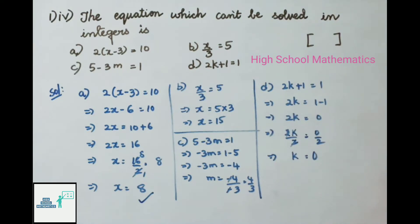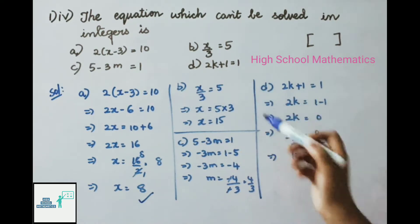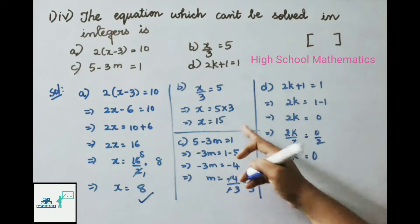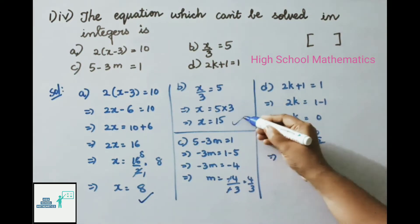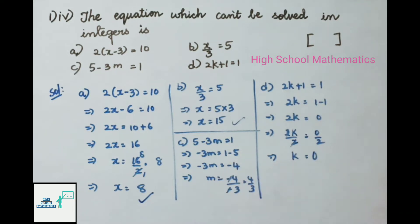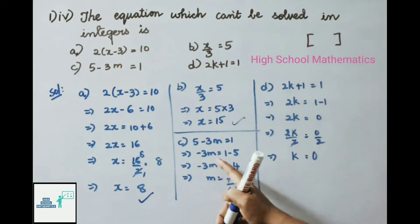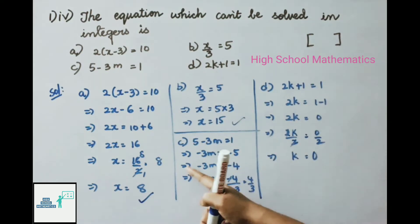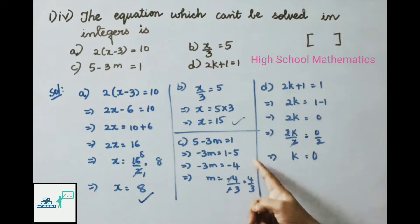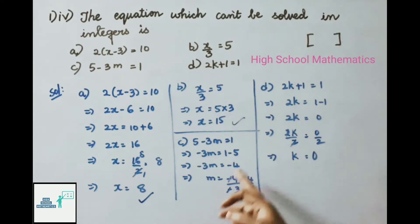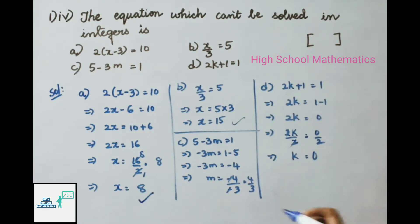Second equation: x/3 = 5, so x = 15, which is an integer. Third equation: 5 - 3m = 1 → -3m = 1 - 5 = -4 → m = -4 ÷ -3 = 4/3, which is not an integer.